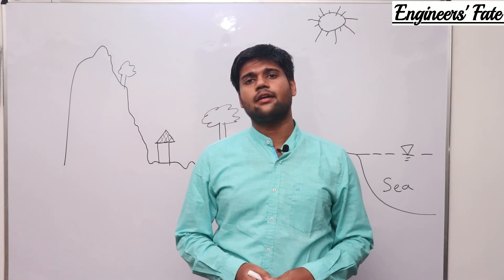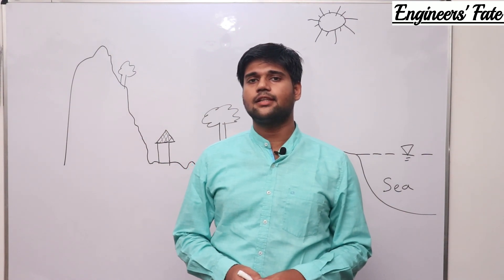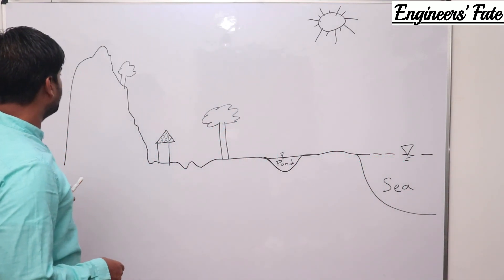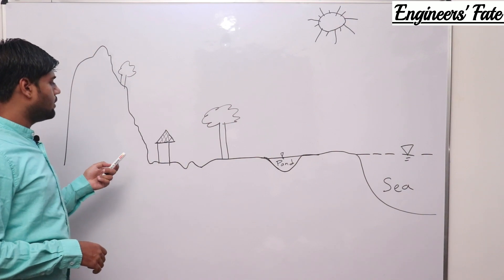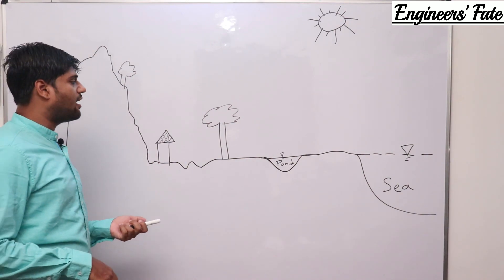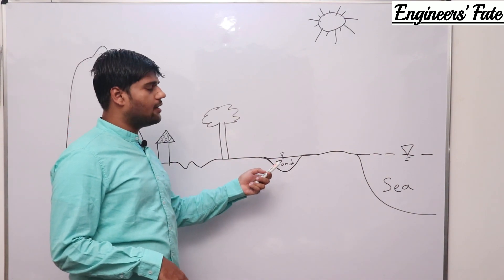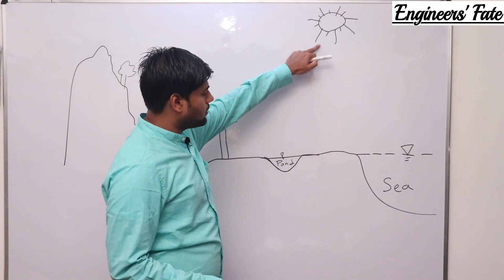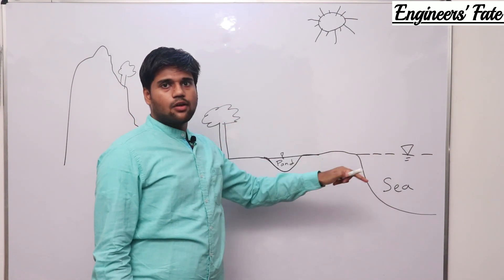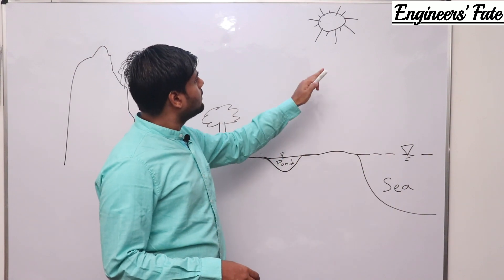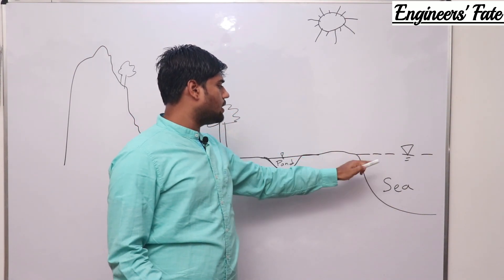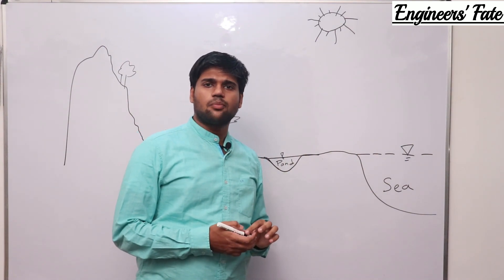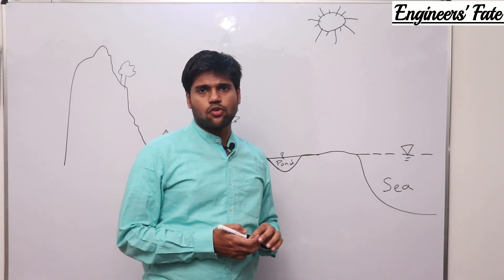To understand the hydrological cycle, let's look at the diagram and analyze what is shown. You can see there is a mountain, a house, trees, a pond, and at last there is the sea. Due to sun's radiation, the water present in the sea or pond gets heated up and water vapor goes to the atmosphere. That process is known as evaporation.